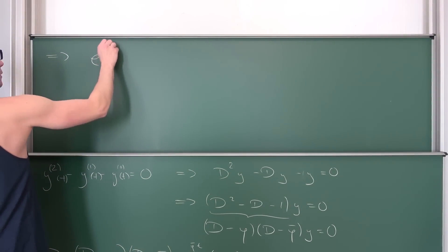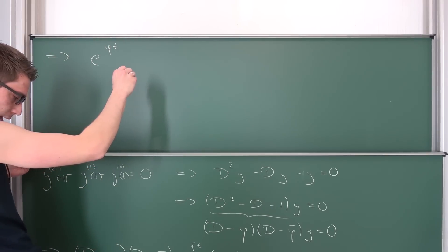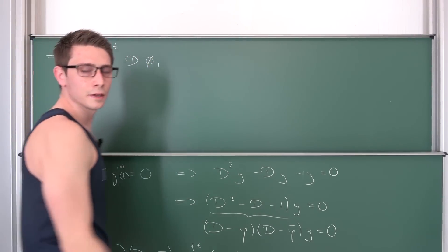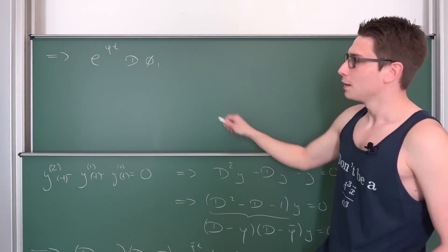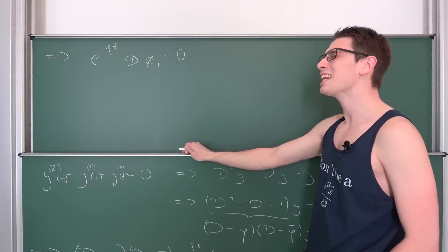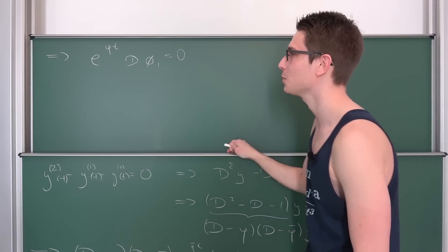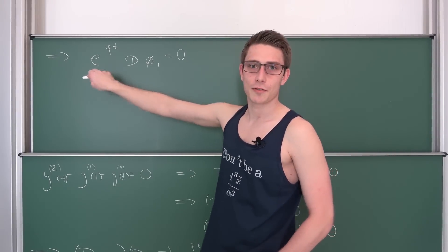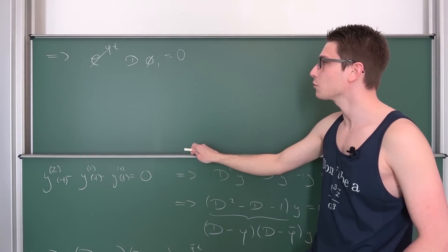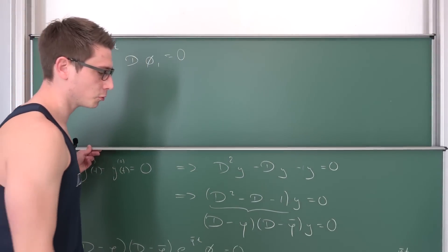Meaning overall, we are going to have e^(φt) · Dφ₁ equals 0. Our exponential function is never equal to 0, so we can multiply by its multiplicative inverse on both sides, getting rid of that. Now we can simply plug in our definition for φ₁ and continue from this point onwards. φ₁ is nothing but the multiplicative inverse of the exponential function times the derivative of φ.